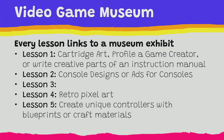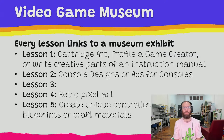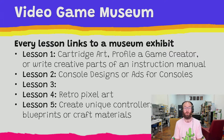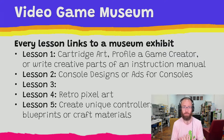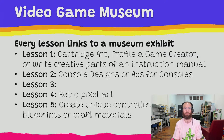In lesson two they could work on console designs like a blueprint, or make ads for consoles. Lesson three is sound, which is hard to capture on paper, so we'll get to activities around sound when we get there. Lesson four could be making retro pixel art for their games. Lesson five, which is radio waves, could be creating unique controllers with blueprints or craft material — because most controllers nowadays are wireless and use radio signals to communicate. Here are some examples of the video game museum set up in one of the schools we work in, with cartridges kids made out of cardboard.